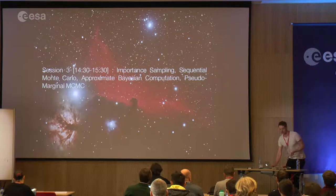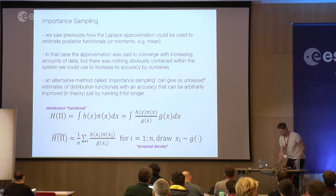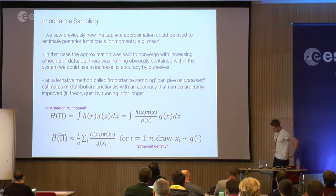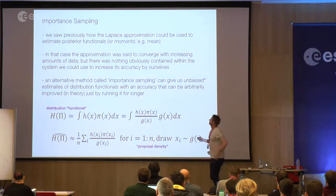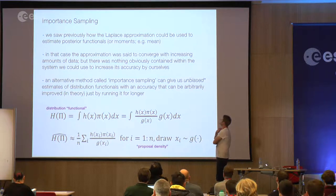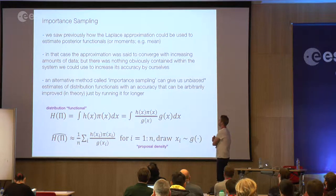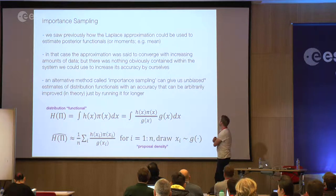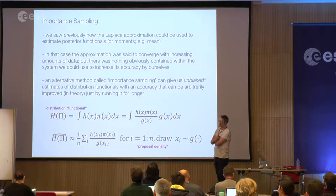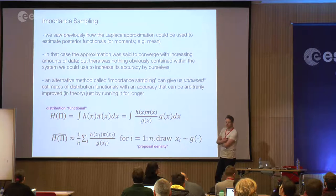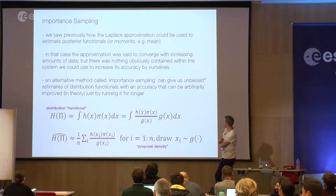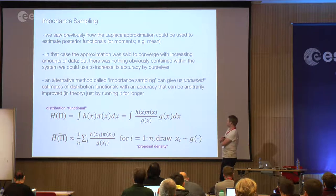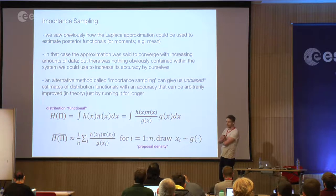We finish at 5:30, so we have one and a half hours. This first topic is importance sampling. In the previous section, we saw how the Laplace approximation can be used to estimate posterior functionals, posterior moments, or posterior density ratios. We recognised it was a first-order, somewhat crude approximation — placing a Gaussian ansatz on top and integrating over that instead of our real function. It would converge with increasing data, but there wasn't much we could do to improve the approximation without getting more data.